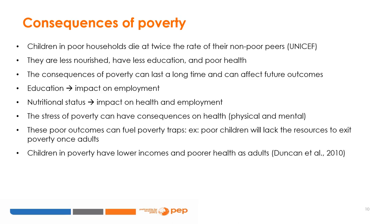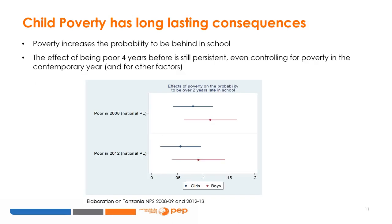We know from longitudinal studies that children who grew up in poverty have lower incomes and poorer health as adults. Here we see an example again from Tanzania. Children who were in poverty in 2008-2009 are still more likely to be behind in school by two or more grades in 2012-2013. Even four years later, if we control for poverty status in 2012-2013, we see that the effects of poverty are persistent.